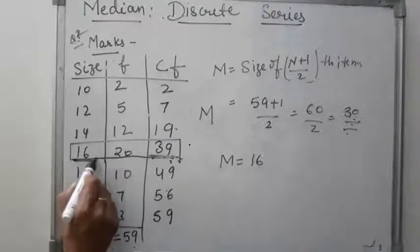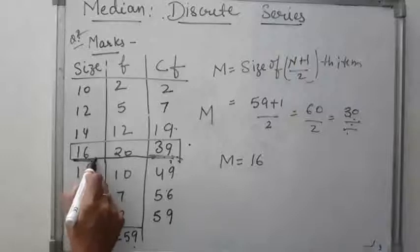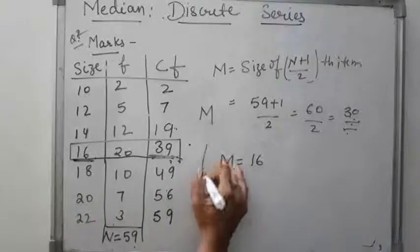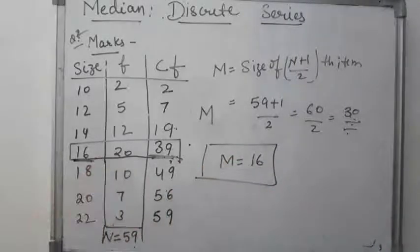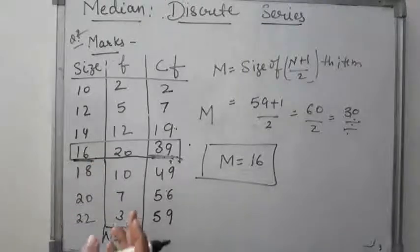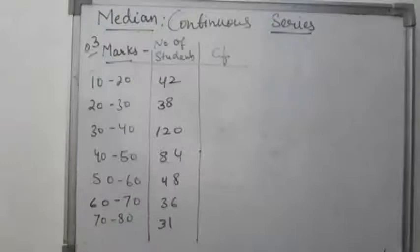So this is our positional average. As mentioned, median is the positional average, and 16 is the median of this series. By this method, we calculate the median in the discrete series.